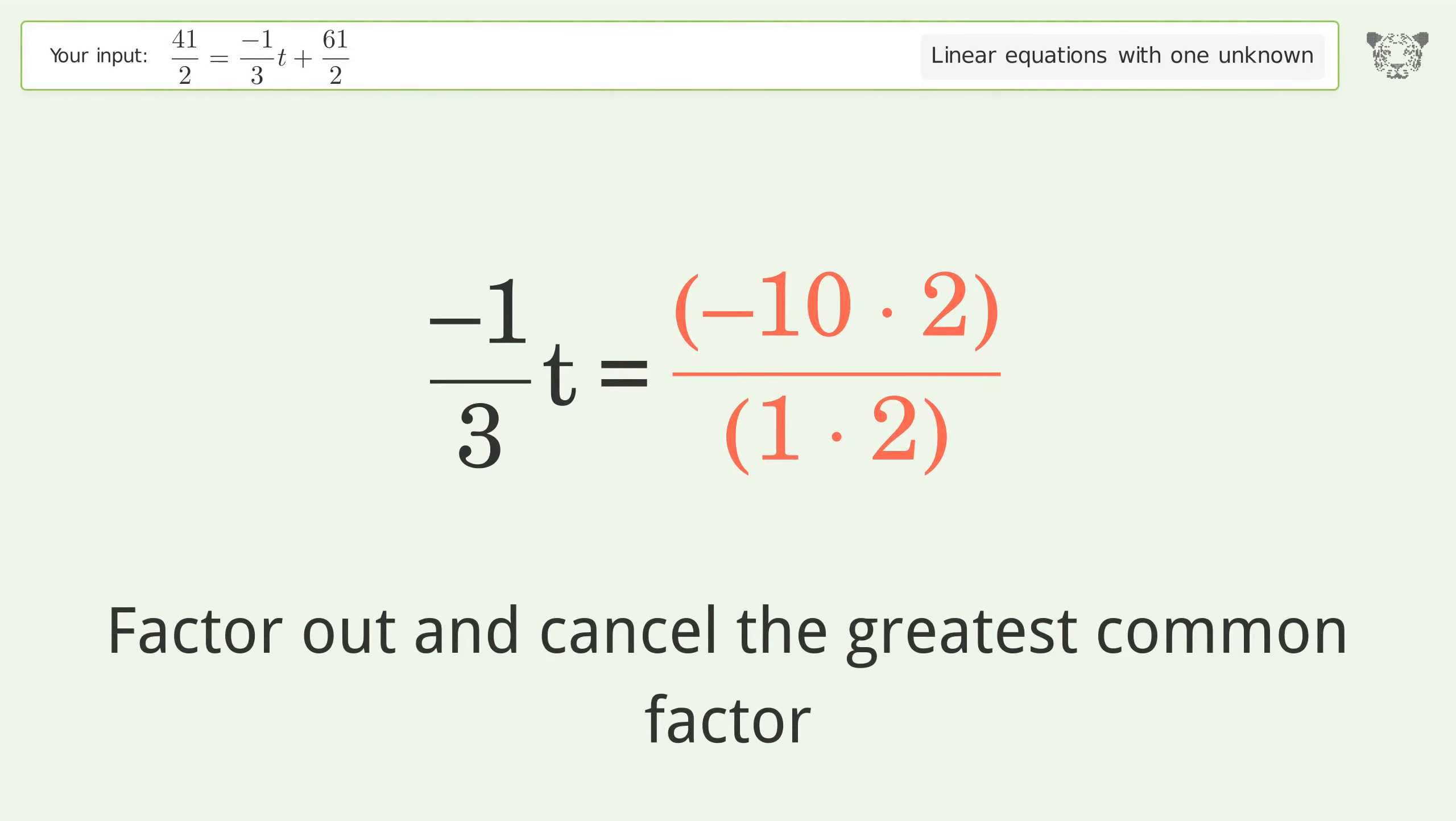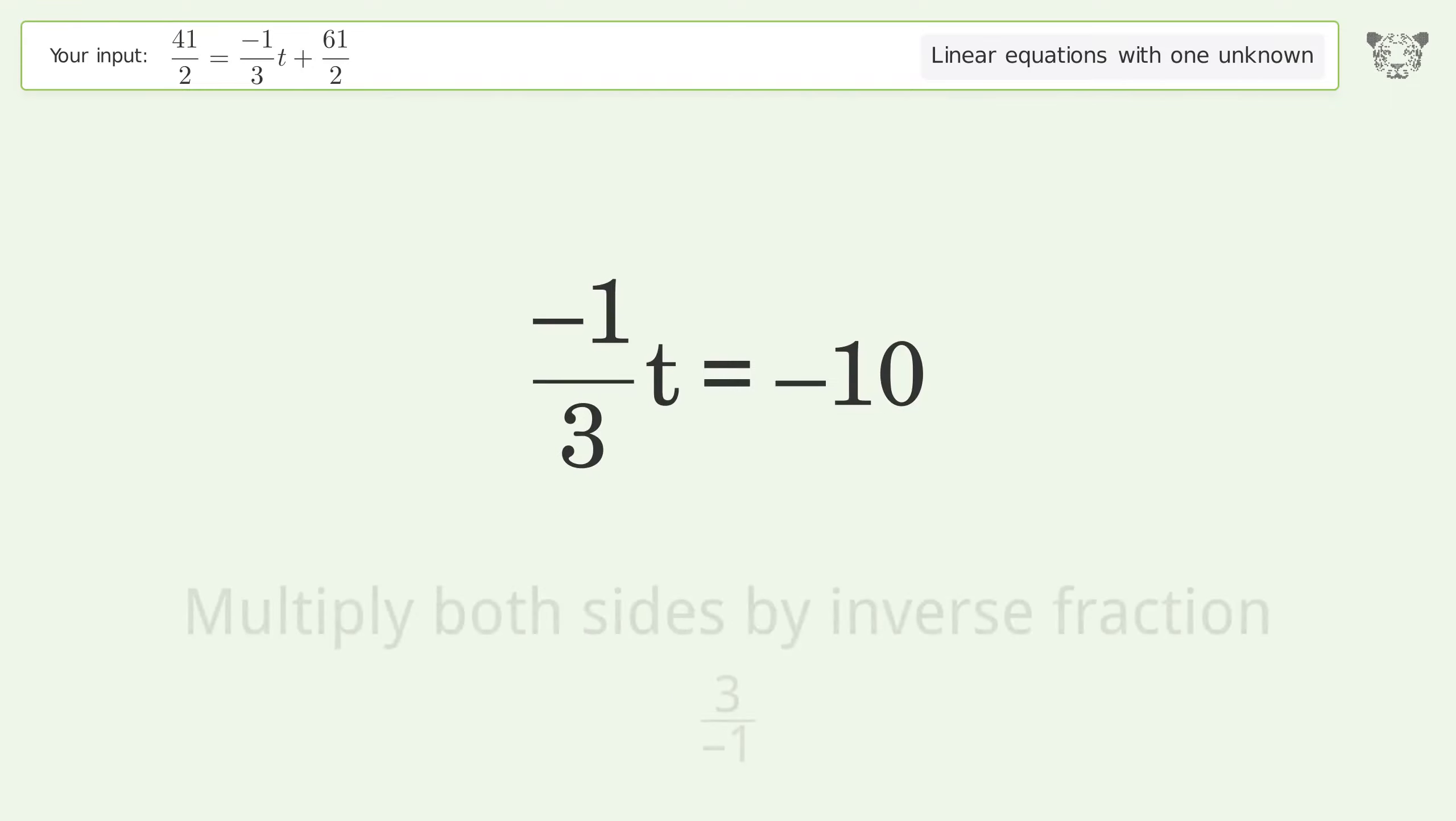Find the greatest common factor of the numerator and denominator, then factor out and cancel the greatest common factor.